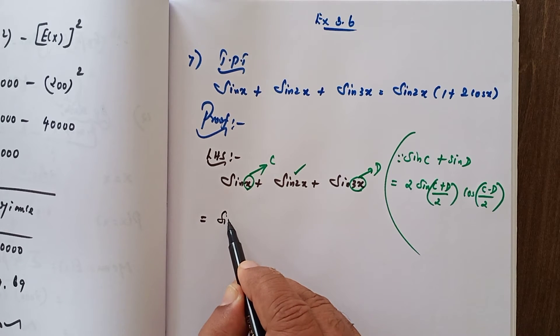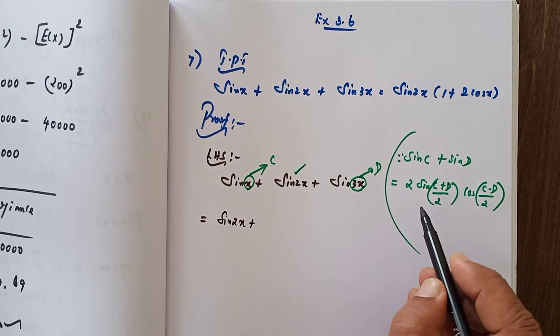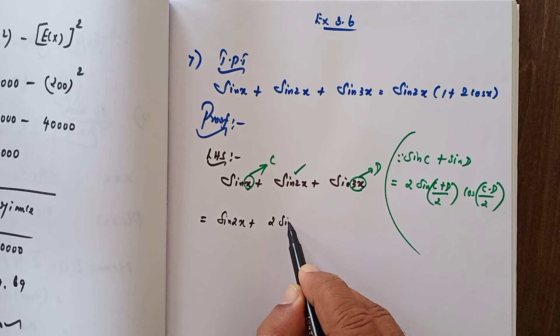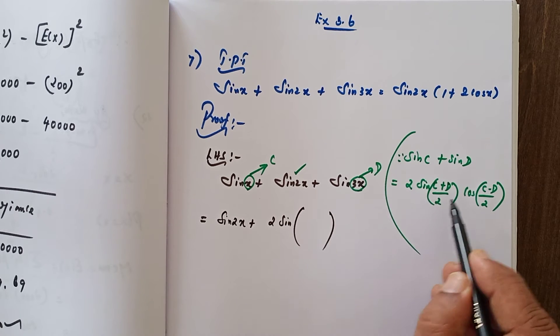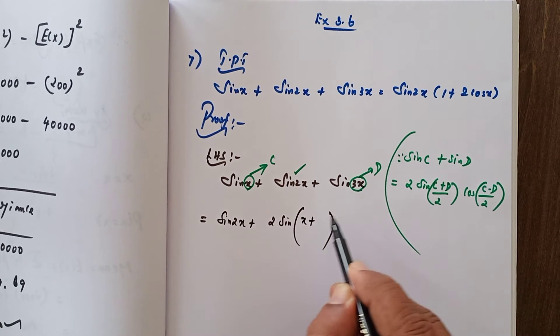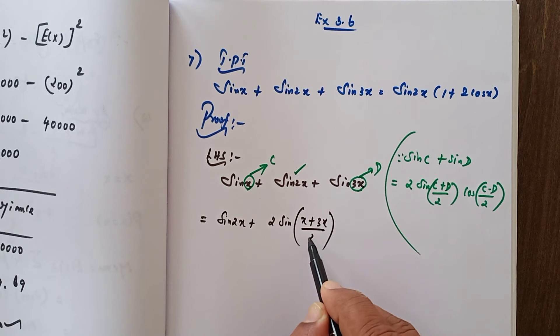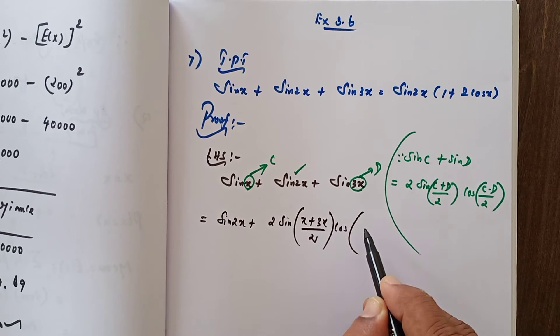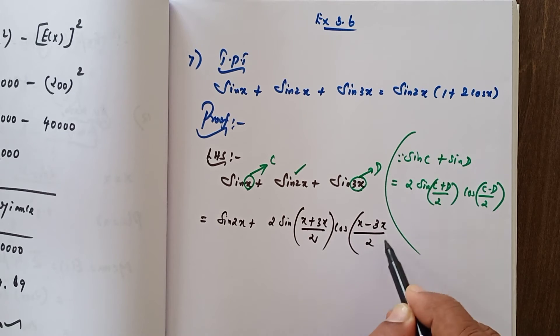Write sin 2x first. Now you can apply the formula: 2 into sin of c plus d, where c equals x and d equals 3x, divided by 2, into cos of c minus d divided by 2.